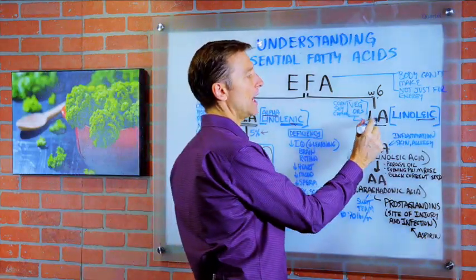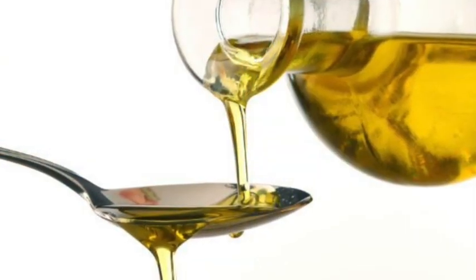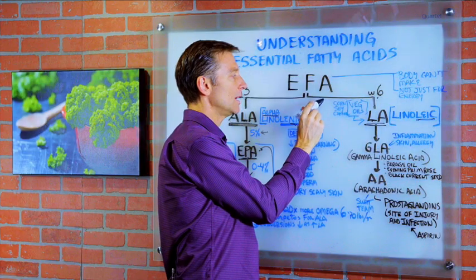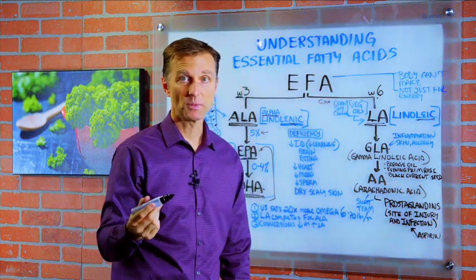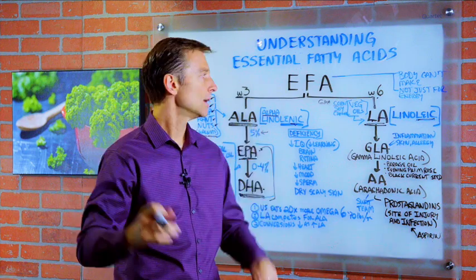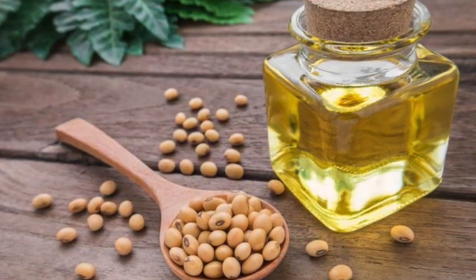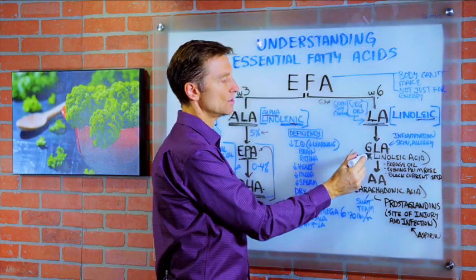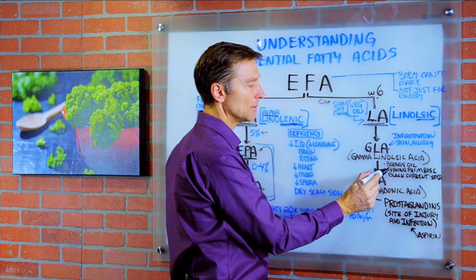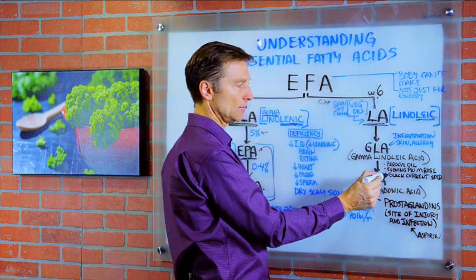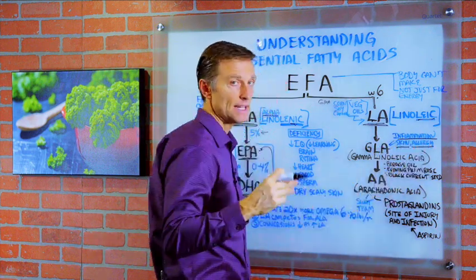Switching over to LA, which is the omega-6: this mainly comes from corn oils, soy oil, and canola. When you consume these oils, you're also consuming glyphosate and herbicide, which is a whole other topic. These are grain oils — they call them vegetable oils, but they're really grain oils. LA can convert into another fat called GLA. You can also get GLA from borage oil, evening primrose oil, and black currant seed oil. GLA is good for inflammation, skin health, allergies, and many other things.